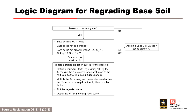This logic diagram is used to determine which base soils require re-grading and the operation used to achieve the re-grading. When the soil does not contain any gravel or particles larger than the number 4 sieve, re-grading is not required. If the soil does contain gravel, it still may not require re-grading if it meets all three listed properties. If one or more of the properties are not met, the soil should be re-graded using the procedure shown.